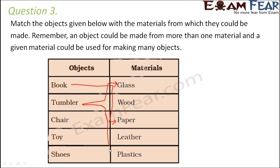Think of a tumbler — a tumbler can be a glass tumbler, or it can also be a plastic tumbler, so both glass and plastic can make a tumbler. Think of a chair — a chair can be a wooden chair, or it can also be a plastic chair. You cannot have a glass chair because glass is fragile and will break very easily.